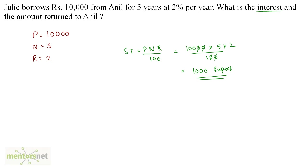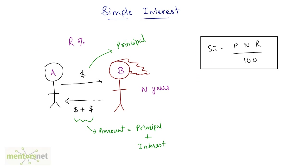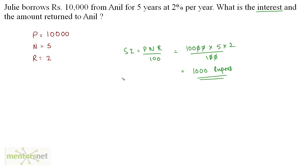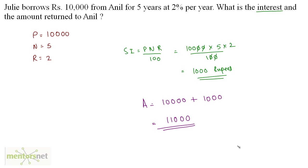We have found the interest. Now we have also been asked the amount returned to Anil. Amount equals principal plus interest, so amount equals 10,000 plus 1,000, which gives us 11,000 rupees. So most questions involving simple interest are pretty straightforward — you just need to remember the formulas.